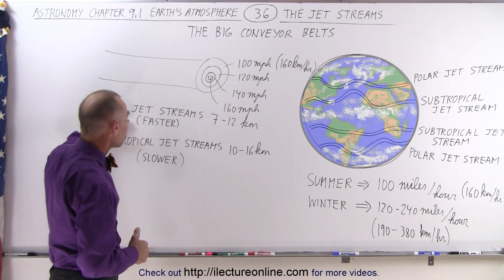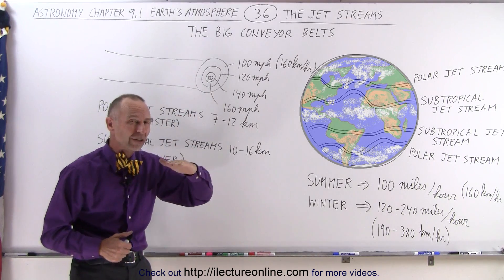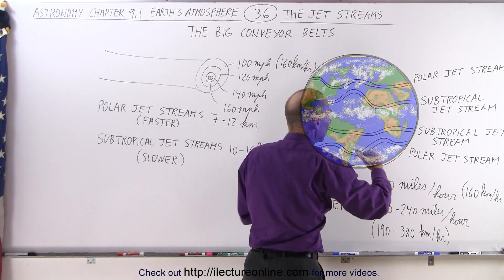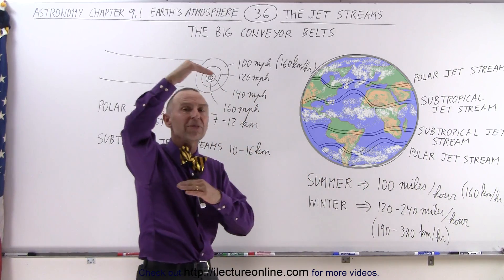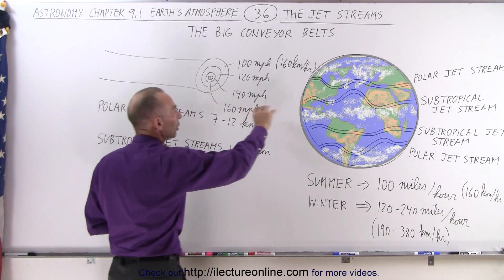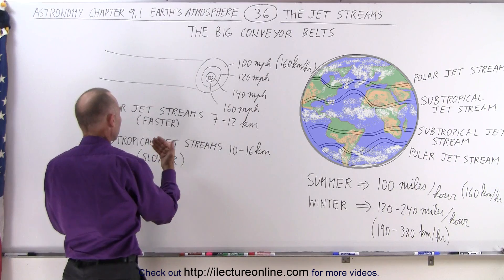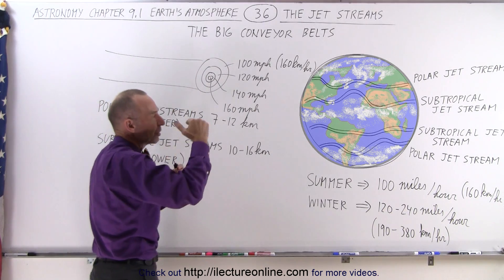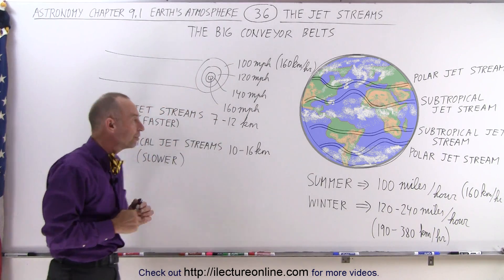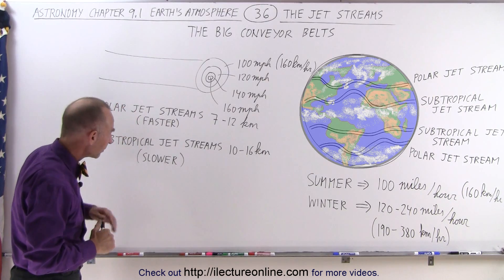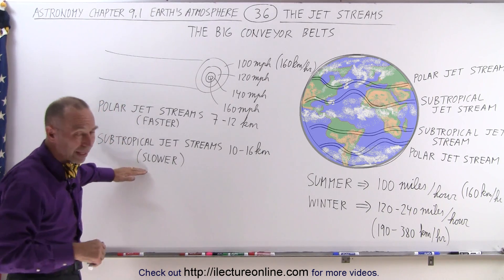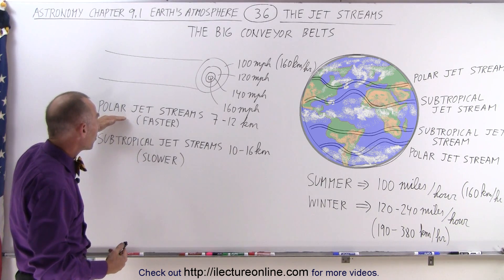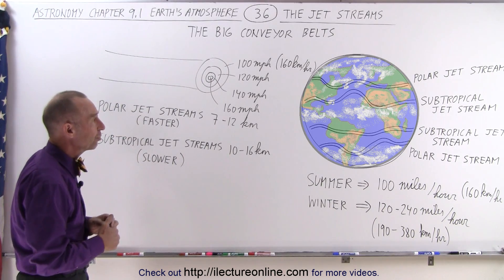The polar jet streams tend to be low in elevation, probably because near the north and south pole the troposphere doesn't go up as high as it does near the equator. Further down, the subtropical jet streams tend to be higher in elevation, near the top portion of the troposphere.